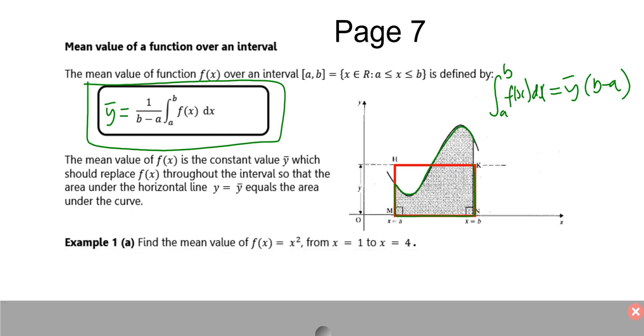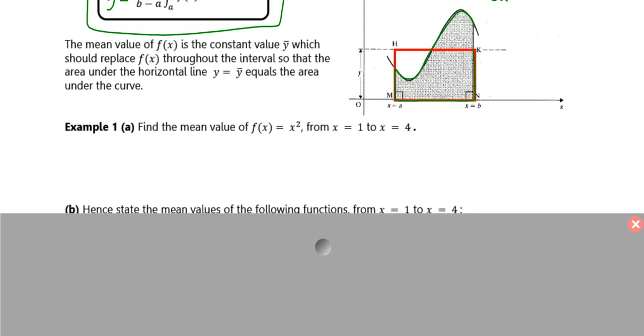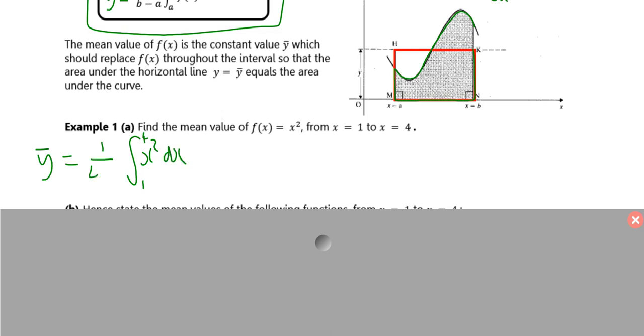I'm going to give a couple of examples. The first one's straightforward, then the second one's more demanding. Find the mean value of f of x is x squared between x is 1 and x is 4. All we need to do is integrate the function, x squared, from x is 1 to x is 4, and then times by 1 over the width of the interval. The interval goes from 1 to 4, so its width is 4 minus 1, which is a third.